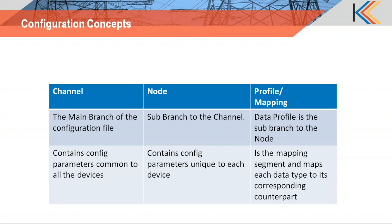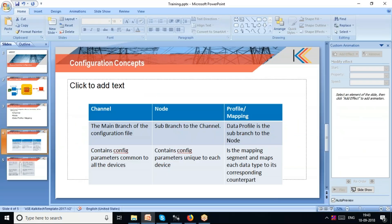The node is a sub-branch of the channel containing unique parameters for each device downstream that needs to be translated from an application upstream. The profile mapping in the EasyConnect workbench is a mapping segment that maps each data type to its corresponding counterpart. I will now show you an EasyConnect file to illustrate this.